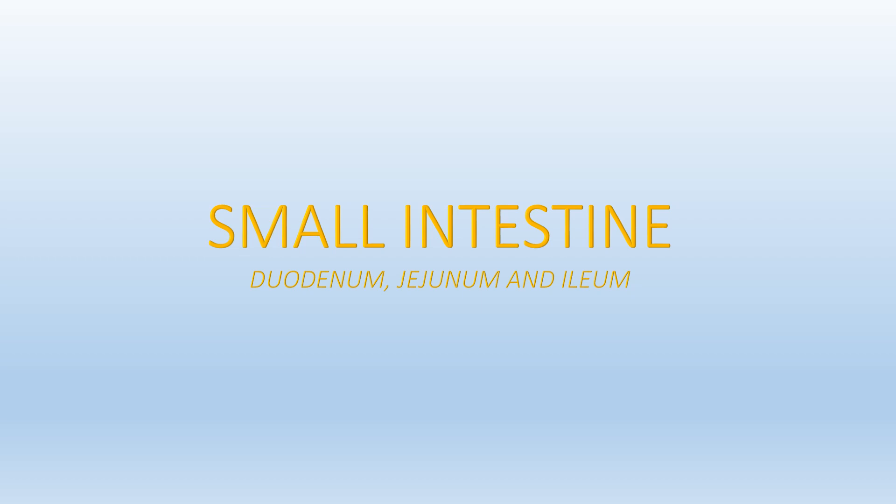The small intestine consists of three parts: the duodenum, the jejunum, and the ileum. In the subsequent slides, I will describe the anatomy of the different parts of the small intestine.